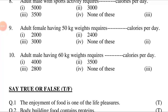Question 9: Adult male having 60 kg weight requires ___ calories per day. Options: first, 4,000; second, 3,500; third, 2,800; fourth, none of these. Answer is third option: adult male having 60 kg weight requires 2,800 calories per day.